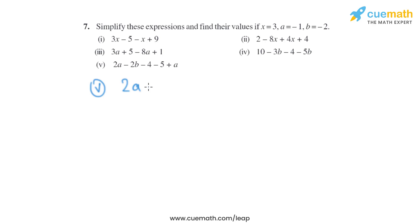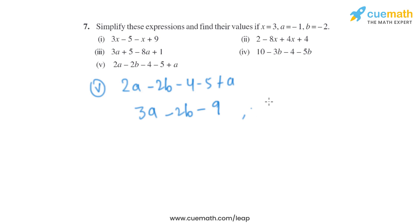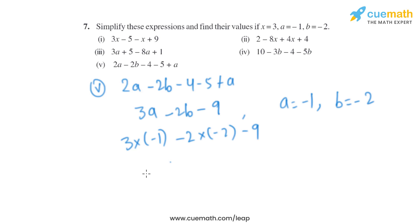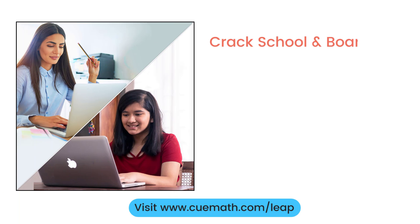The fifth expression is 2a minus 2a minus 2b minus 4 minus 5 plus a. The like terms 2a and a give us 3a, minus 2b stays, and minus 4 minus 5 gives minus 9. So the simplified form is 3a minus 2b minus 9. Putting a equals minus 1 and b equals minus 2: 3 into minus 1 is minus 3, minus 2 into minus 2 is plus 4, and minus 9 gives minus 3 plus 4 minus 9, which equals minus 8.